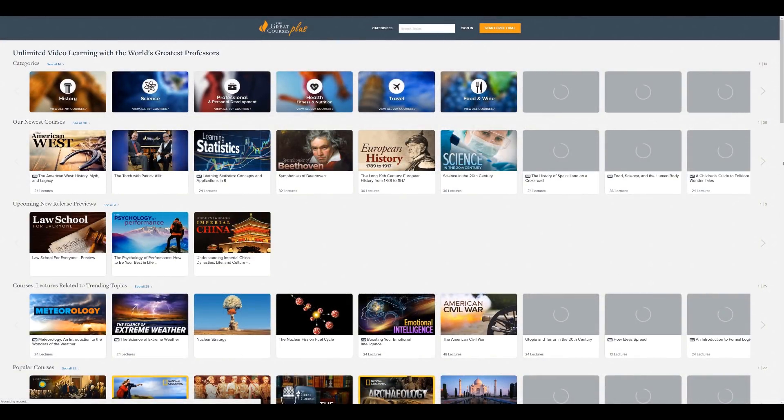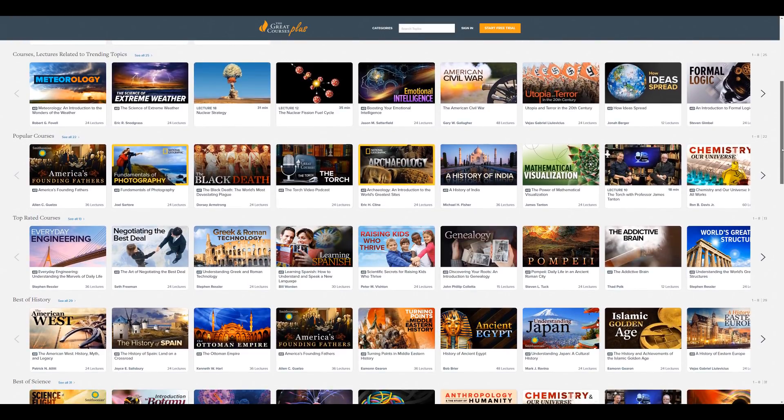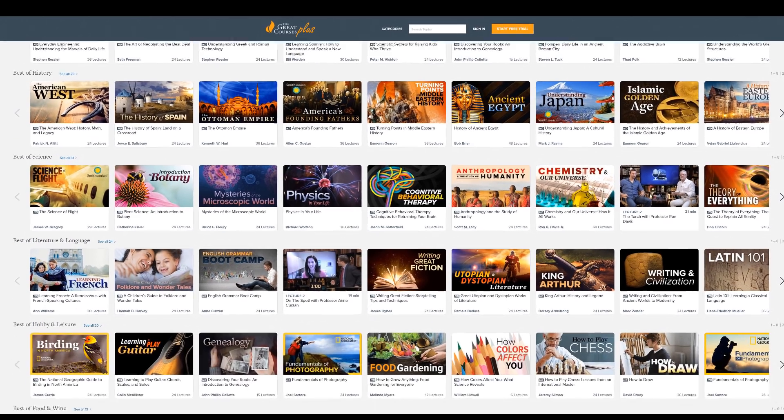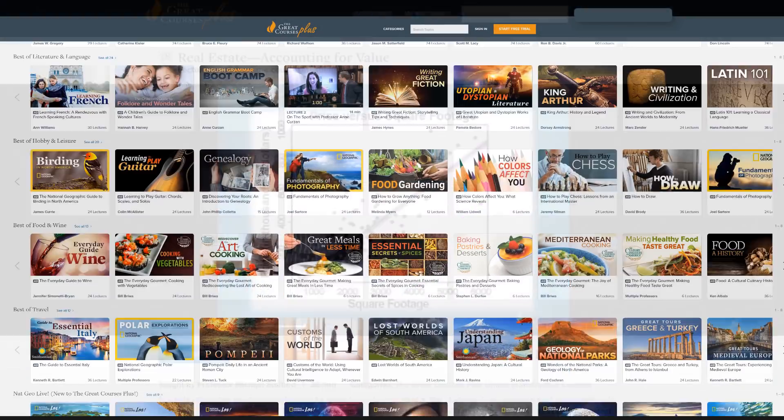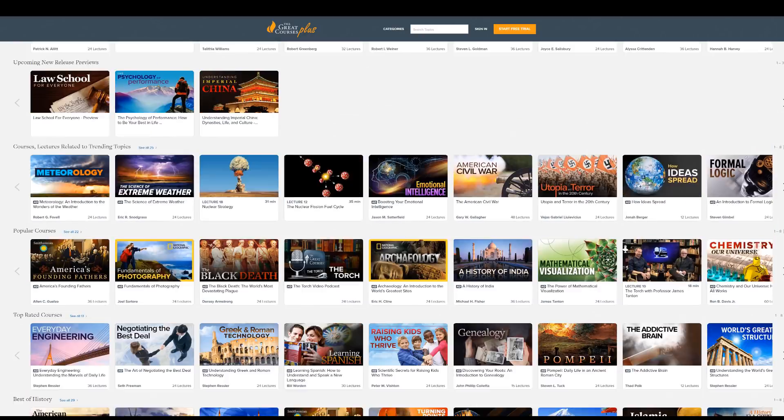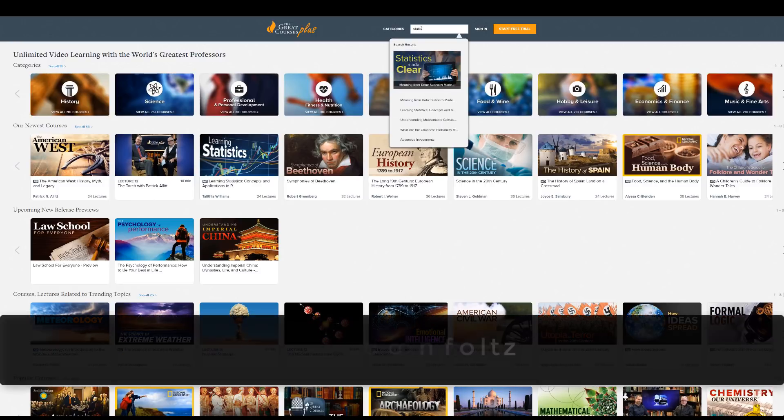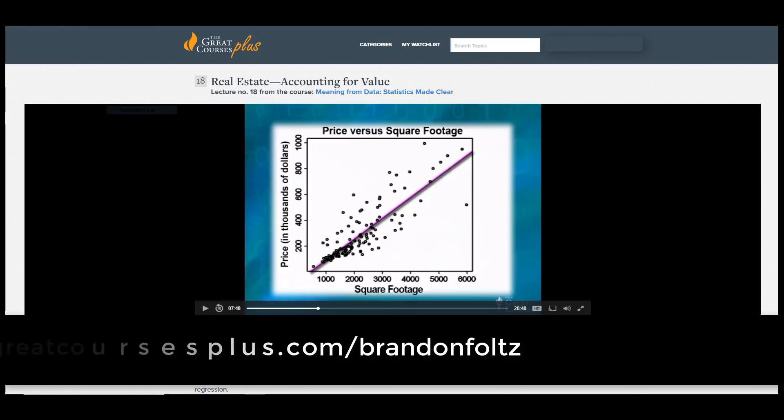This video is brought to you by The Great Courses Plus, where you can get unlimited access to over 10,000 different video lectures taught by award-winning professors from the Ivy League and other top schools around the world. You can learn about anything that interests you, science, literature, and yes, statistics, like this lecture from Professor Michael Starbird called Real Estate, Accounting for Value, from his course, Meaning from Data, Statistics Made Clear. And right now, The Great Courses Plus is offering my viewers a free trial and is also now optimized for Australia and the UK. So go to thegreatcoursesplus.com slash Brandon Foltz, my name, to have access to the 10,000 video lecture library or click on the link in the description below.